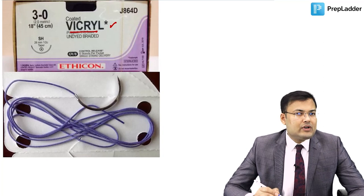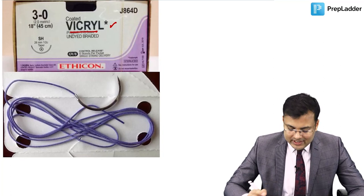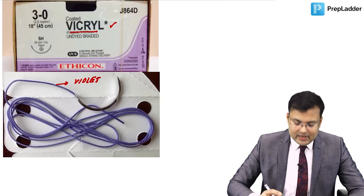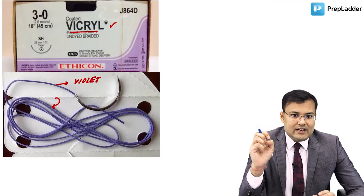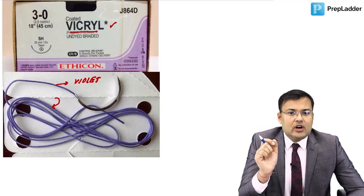Vicryl, also known as polyglactin, is a polyfilament synthetic suture that can be identified by its violet color and multiple braided strands with crevices between them. It is a copolymer of glycolide and lactide. It is a delayed absorbable suture, and its tensile strength is maintained for 28 to 30 days.